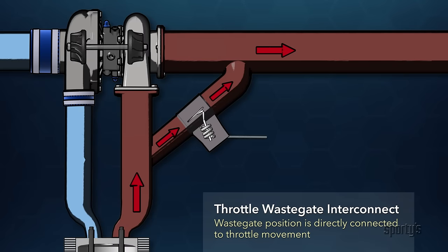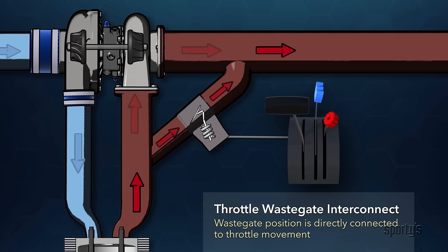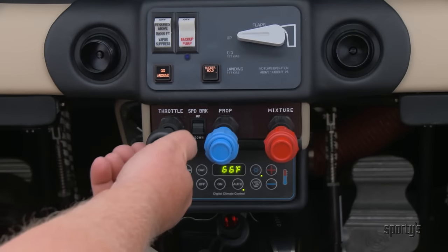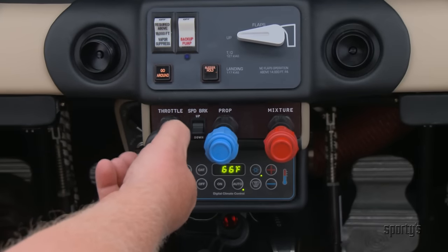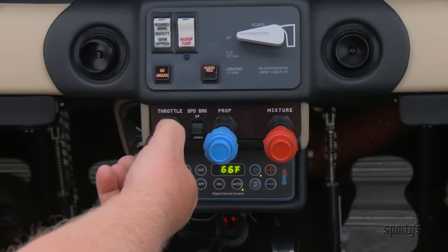Some engines use a throttle wastegate interconnect system. When the throttle is initially advanced, the wastegate remains open. After the throttle position is about half, the wastegate begins to shut and becomes completely closed at the full throttle setting. The pilot must limit the throttle movement to keep manifold pressure within the limit specified for the engine.